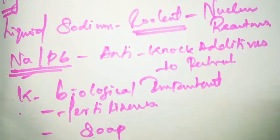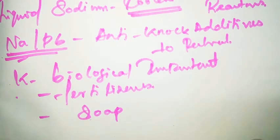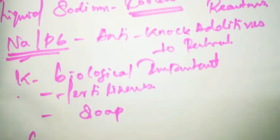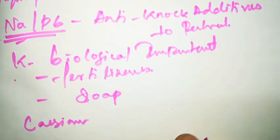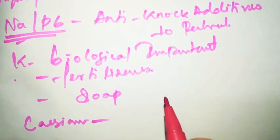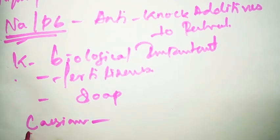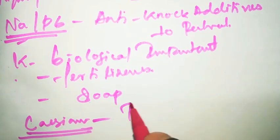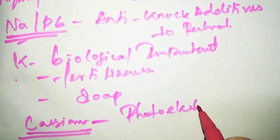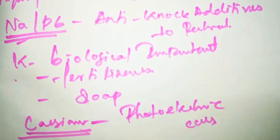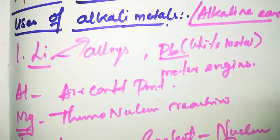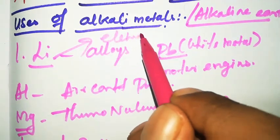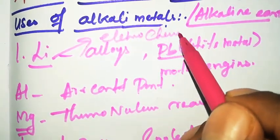Cesium (Cs) is used for making photoelectric cells. Lithium also has another important use — it is used in electrochemical cells.